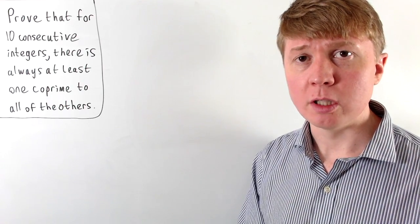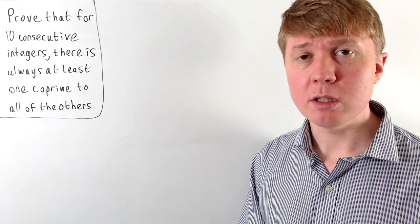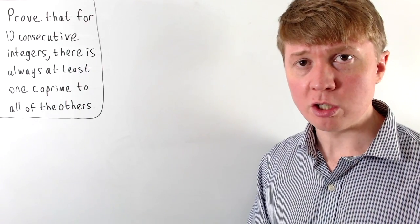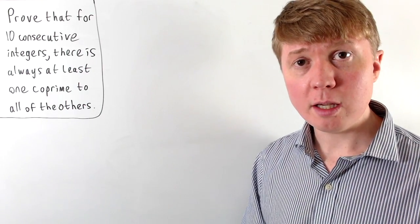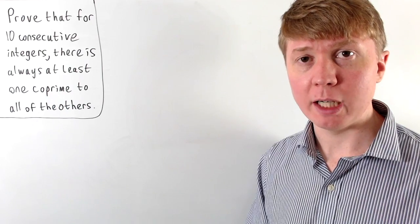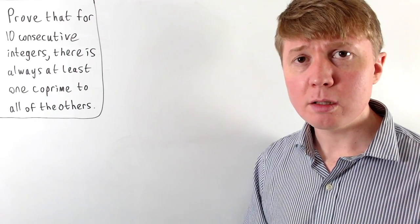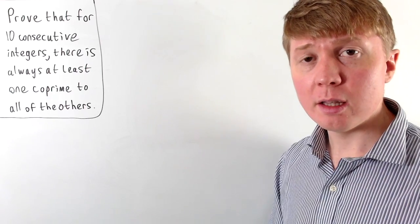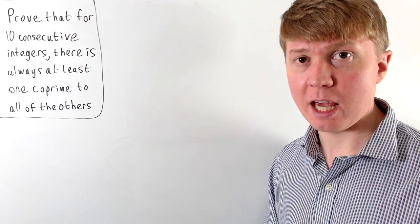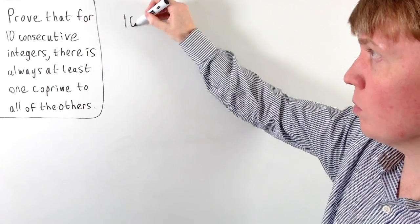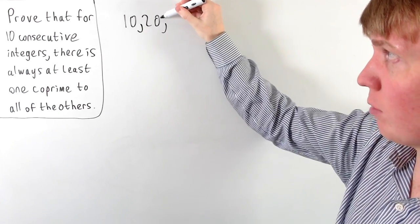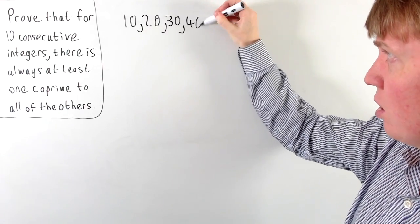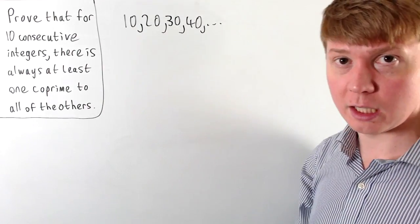The first step towards solving this problem is to notice that if we've got 10 consecutive integers, they're all very close to each other, and this really limits what any common factors could possibly be. For example, if we look for a common factor of 10, then two of our numbers would have to be in the 10 times table — we'd have to have two multiples of 10, so we'd have 10 and 20, 20 and 30, 30 and 40, or something like this.